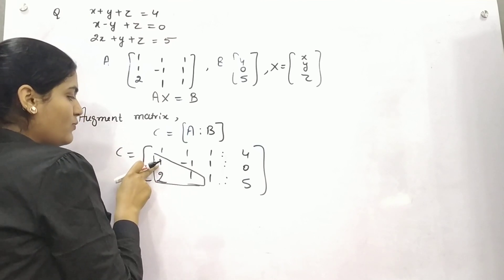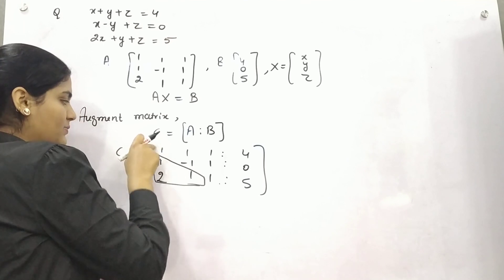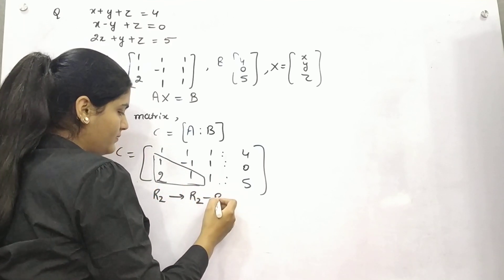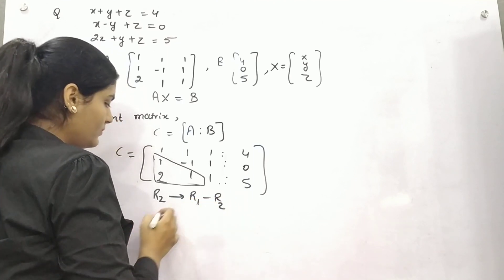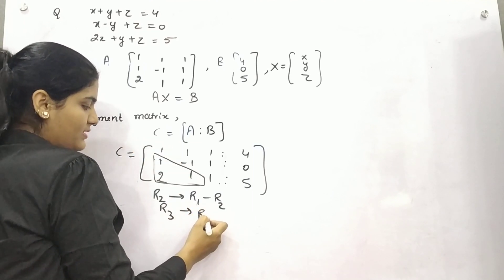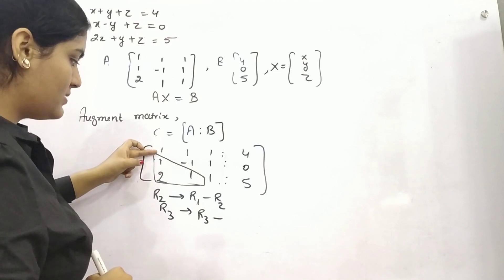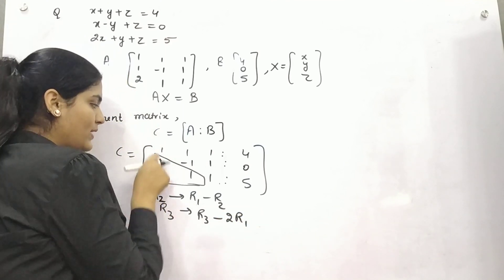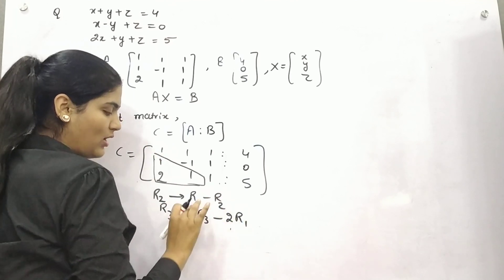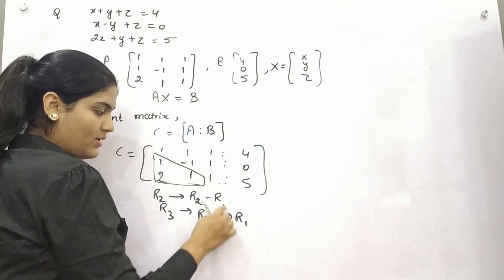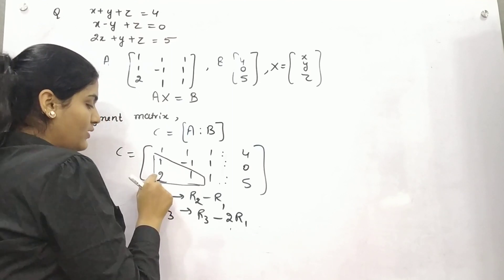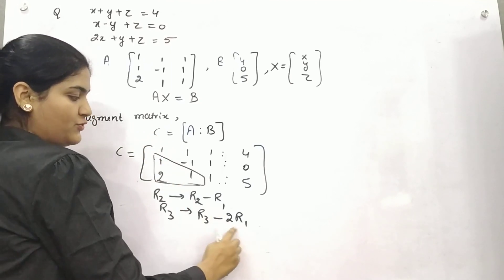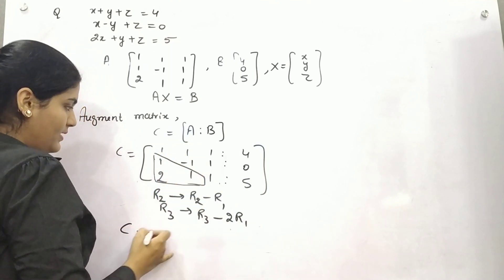To make these two zeros altogether: for row 2, you deduct row 1 from row 2. And for row 3, you can subtract twice of row 1 from row 3, because if you want to make it zero, you have to multiply row 1 by 2 — so 2R1. You are not applying anything to row 1; keep all elements constant.